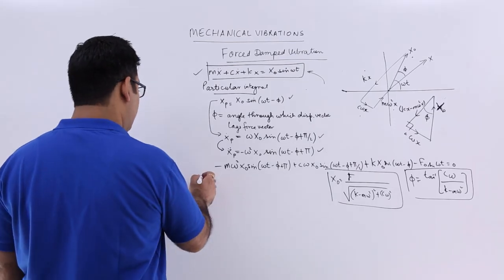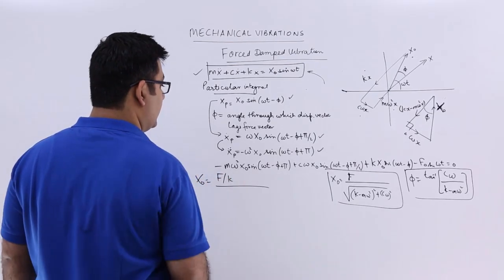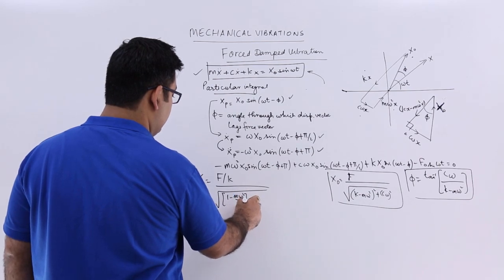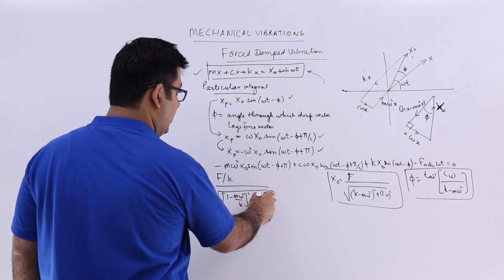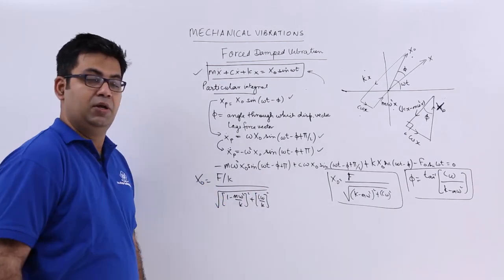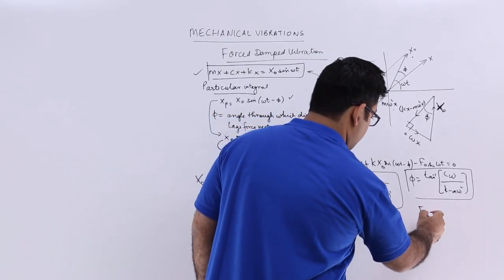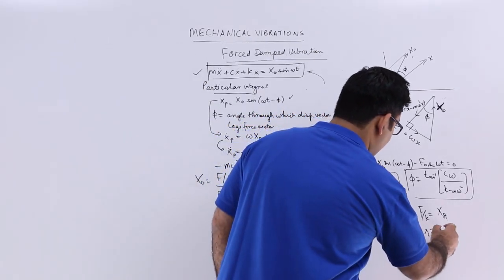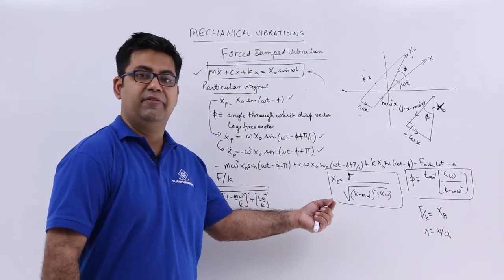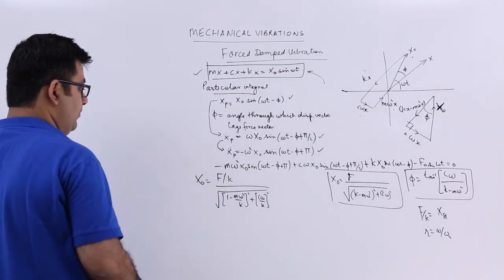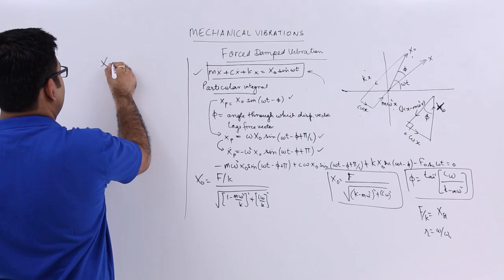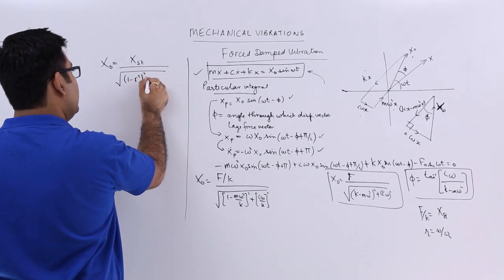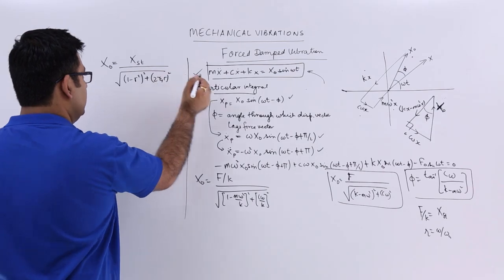Now let's divide the entire equation by k. So x0 = (F/k) / sqrt[(1 - m*omega^2/k)^2 + (c*omega/k)^2]. Here F/k can be called the static deflection (xst), and r = omega/omega_n is the ratio between the forced frequency and the natural frequency. So the expression becomes: x0 = xst / sqrt[(1 - r^2)^2 + (2*zeta*r)^2].